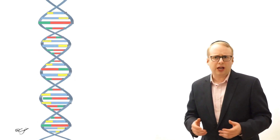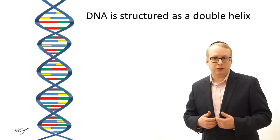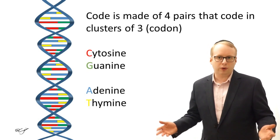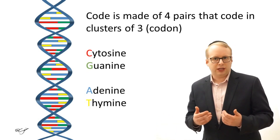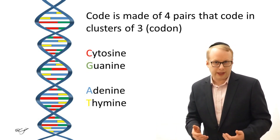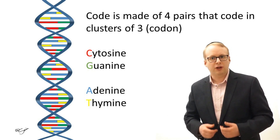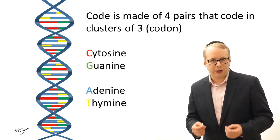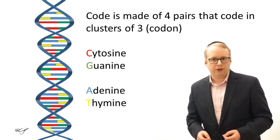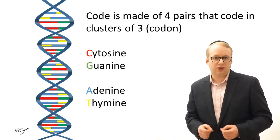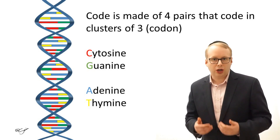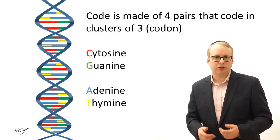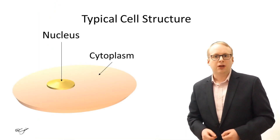If you consider a computer's code, which is made of binary code — long strings of ones and zeros — the actual code of DNA is more complex and is made up of four base pairs, known by the first letters C, T, A and G, which do the coding in groups of three, which are the codons.